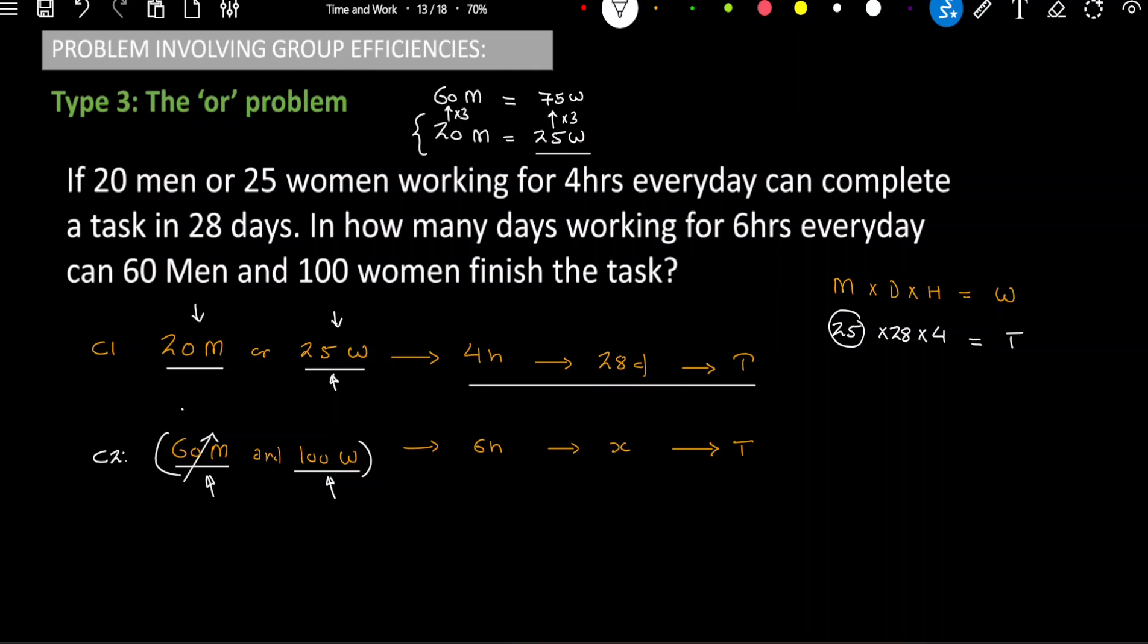So, in place of 60, I will introduce 75 women. And now, there is no problem. 75 women and 100 women. Total is going to be 175. So, if 175 women work for 6 hours every day on the same task, in how many days the work will be completed? Just divide the two equations and you can get your answer.